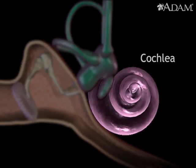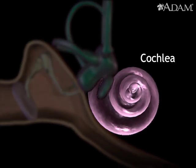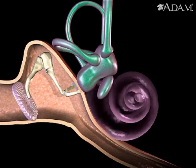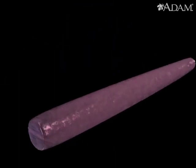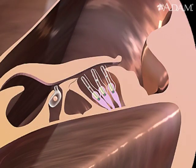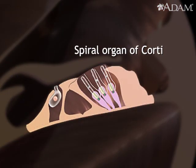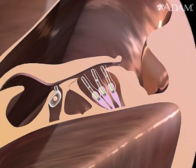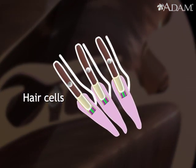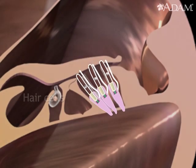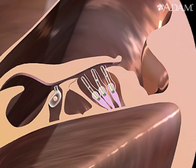This action is passed on to the cochlea, a fluid-filled, snail-like structure that contains the organ of corti — the organ for hearing. It consists of tiny hair cells that line the cochlea. These cells translate vibrations into electrical impulses that are carried to the brain by sensory nerves.